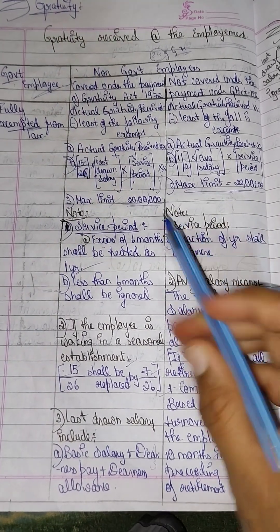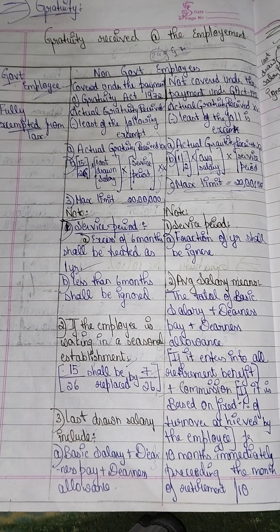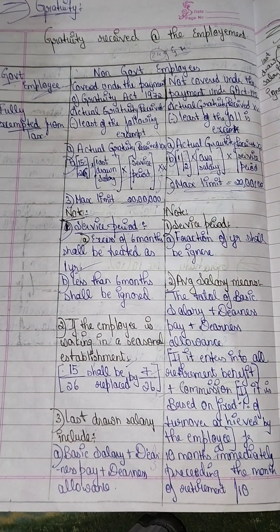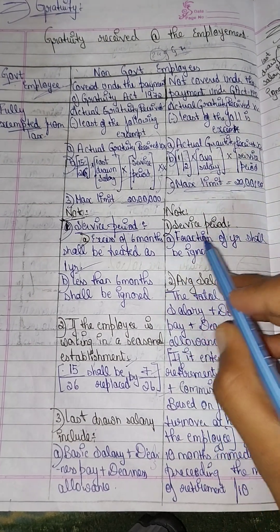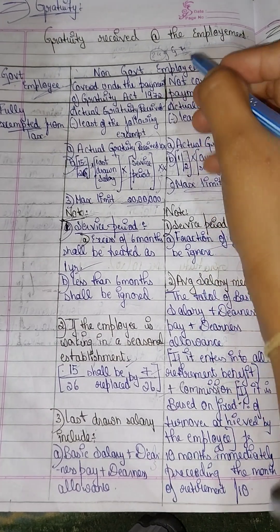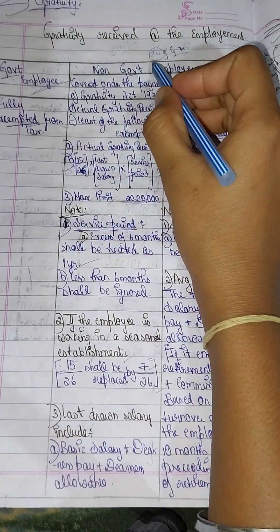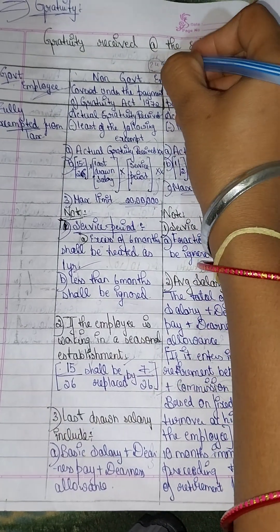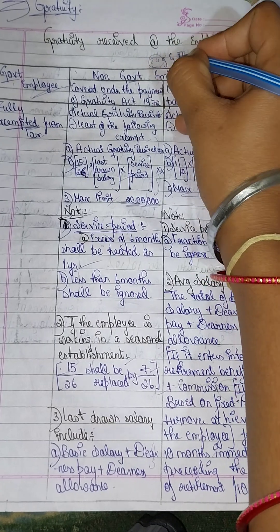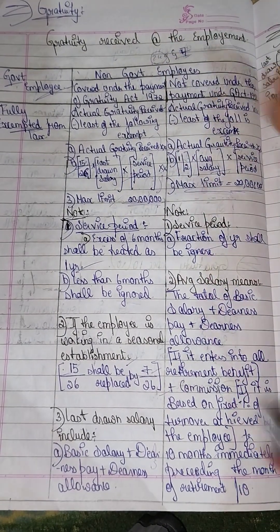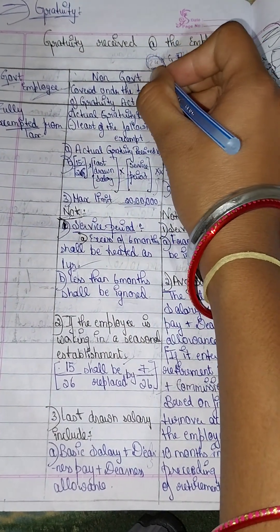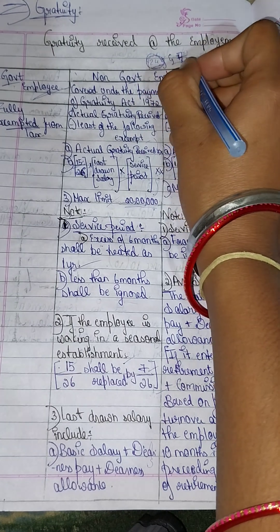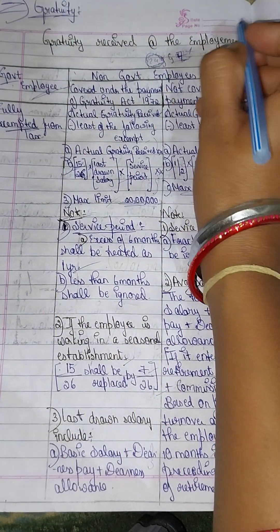Note on service period for not-covered employees: six months or less shall be ignored — the fraction of the year shall be ignored. For example, 24 years and 7 months or 4 months — fractions under 6 months are ignored, so you round down. Take the completed years only.